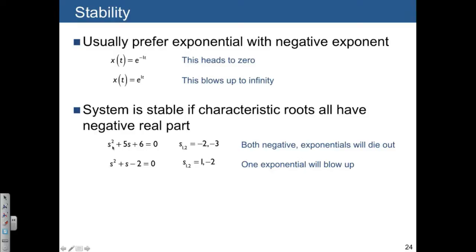s squared plus 5s plus 6: the roots are negative 2 and negative 3, so this system is stable. We can also have s squared plus s minus 2, where we have a positive and a negative part. One exponential is going to blow up, and even though the other one is well-behaved, we say this system is unstable.